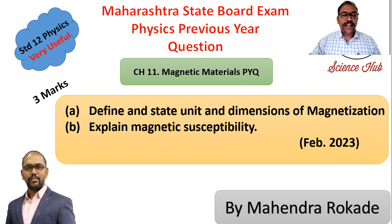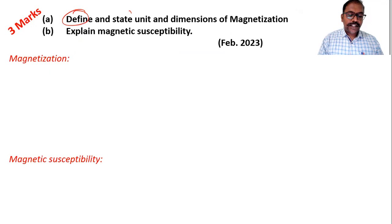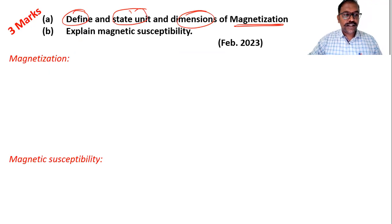Next part is explain magnetic susceptibility. So these two parts for three marks. Now let's see the solution here. The first part: definition and state unit dimension for this magnetization. So magnetization formula you know M by V.